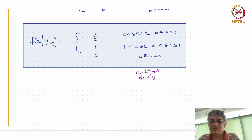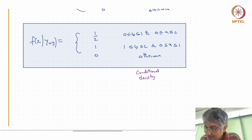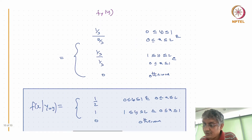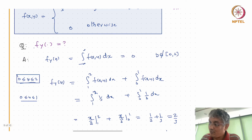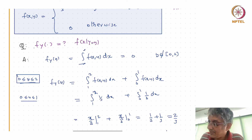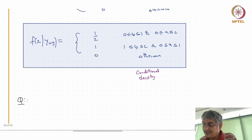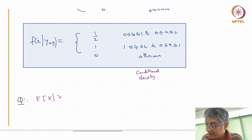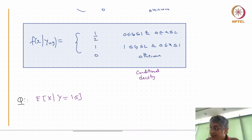One can now ask: what is the conditional density of X given Y = 3/2, and what is the variance of X given Y = 3/2?